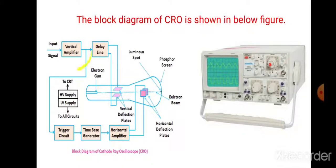Next is the trigger circuit. The functioning of the trigger circuit: it produces a triggering signal in order to synchronize both the horizontal and vertical deflection of the electron beam.